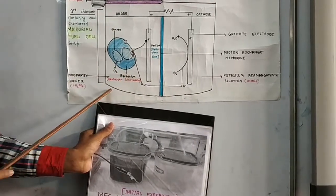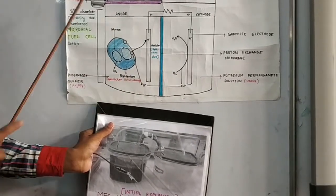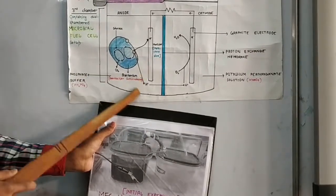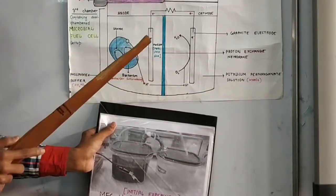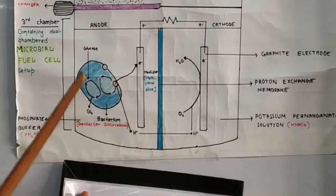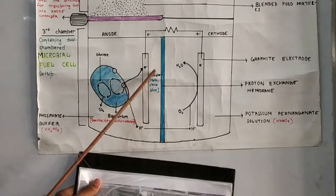In the anode chamber, we have put a bacteria called Geobacter sulfurreducens, which is an exoelectrogenic bacteria. We have used phosphate buffer here, which will resist any pH change. In this anode chamber, we have methylene blue, which is a mediator that will carry electrons.